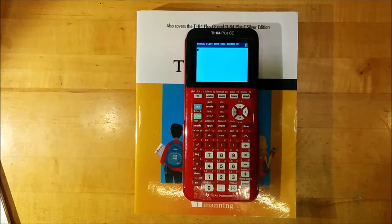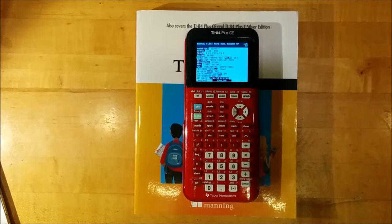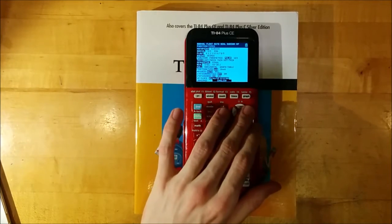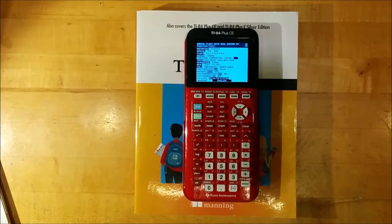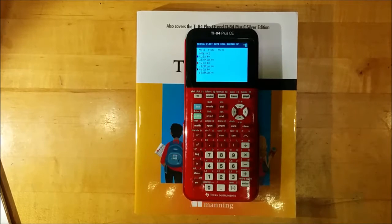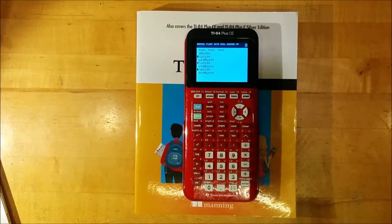The final graphing mode you might want to explore is sequence graphing. To switch to sequence mode, press mode, move once again to the function parametric polar sec line, move the cursor to sec and press Enter. Here, sequence will become selected. Go to y equals, and it'll have changed once more into a new form for the sequence mode. You can see that you can only enter as many as three sequence functions simultaneously, but they are more complex functions, so the calculator has to spend more time computing each one.